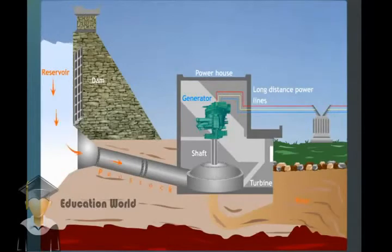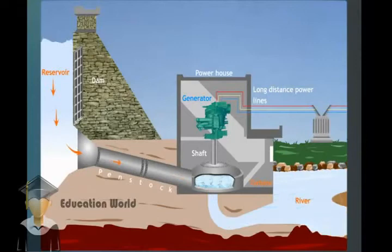Water flows through the penstock and rotates the turbine. The flowing water rotates the turbine, which is placed at the end of the penstock.